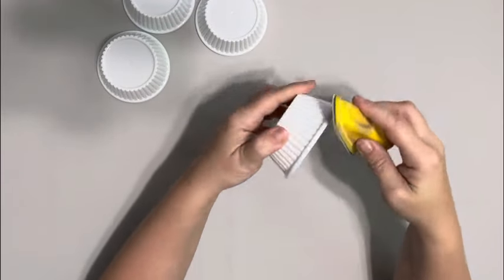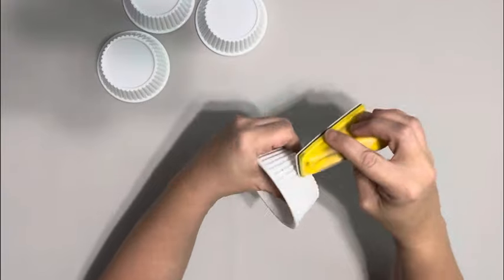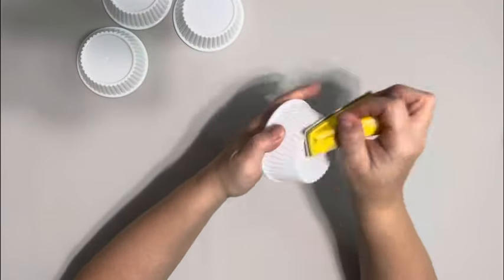I started by sanding the outside of each of them. This will help the paint adhere better as well as the glue.